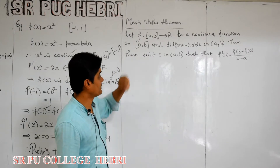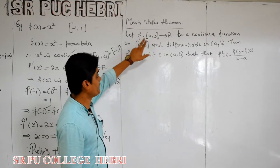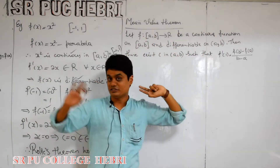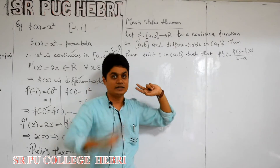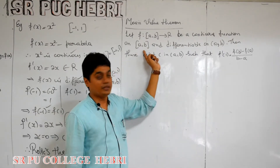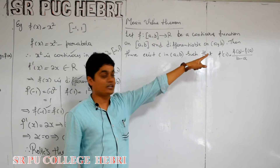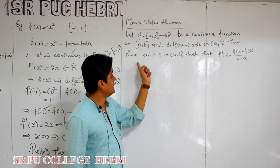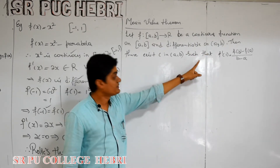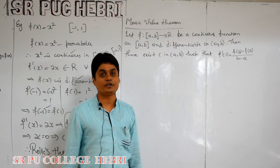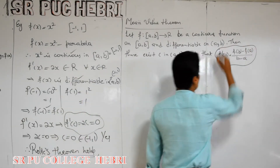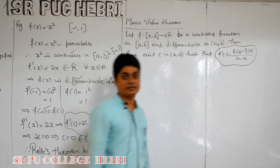Mean Value Theorem statement: Let f from [A, B] to ℝ be a continuous function on the closed interval [A, B] and differentiable on the open interval (A, B). Then there exists c belonging to (A, B) such that f'(c) is equal to [f(B) − f(A)] / (B − A).